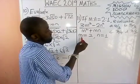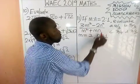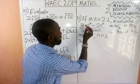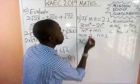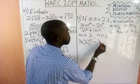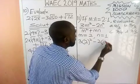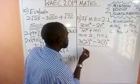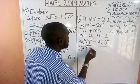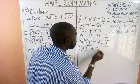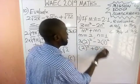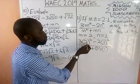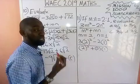So anywhere we see m we put 2, and anywhere we see n we put 1. We evaluate the expression: the numerator is 3 times m squared minus 2 times n squared, which becomes 3 times 2 squared minus 2 times 1 squared. The denominator is n squared plus m times n, which is 1 squared plus 2 times 1.